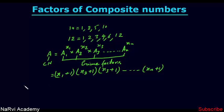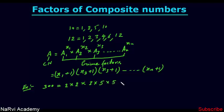Let's take an example. Find the number of factors of the composite number 300. First we need to factorize 300 into its prime factors. The prime factors are 2 × 2 × 3 × 5 × 5, which we write with powers as 2² × 3¹ × 5². Now we have the respective powers of the prime factors, so we just need to add 1 to each respective power.